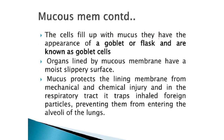The cells filled with mucus have the appearance of a goblet — flask-shaped — and are known as goblet cells. These cells have the ability to produce mucus. Organs lined by mucous membrane have a moist, slippery surface, like the surface of our mouth. Goblet cells produce mucus, and the function of mucus is to protect the lining membrane from mechanical and chemical injury. This mucous membrane protects organs such as the respiratory tract, GI tract, and genitourinary tract from mechanical and chemical injuries.